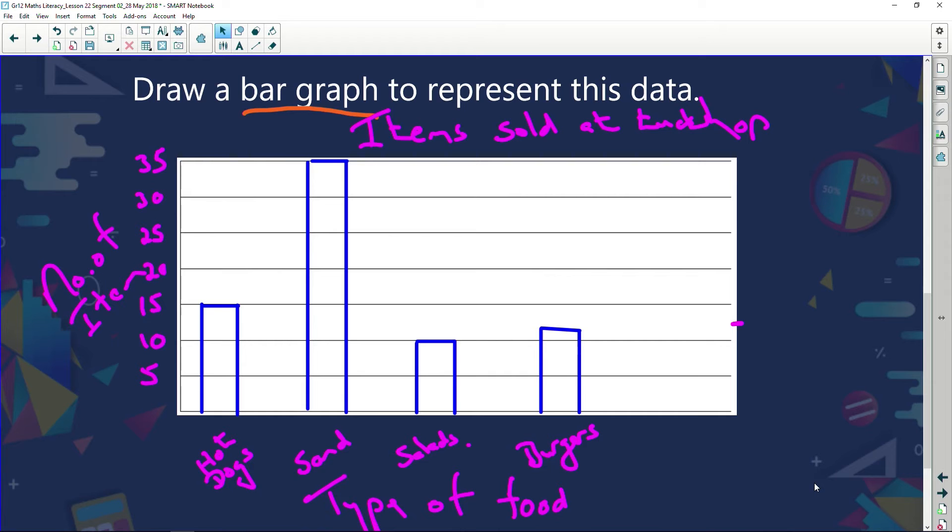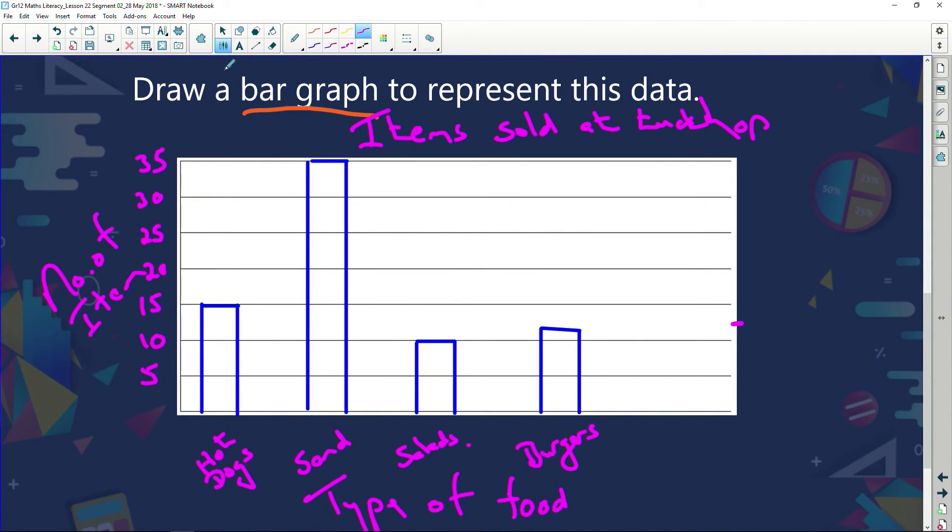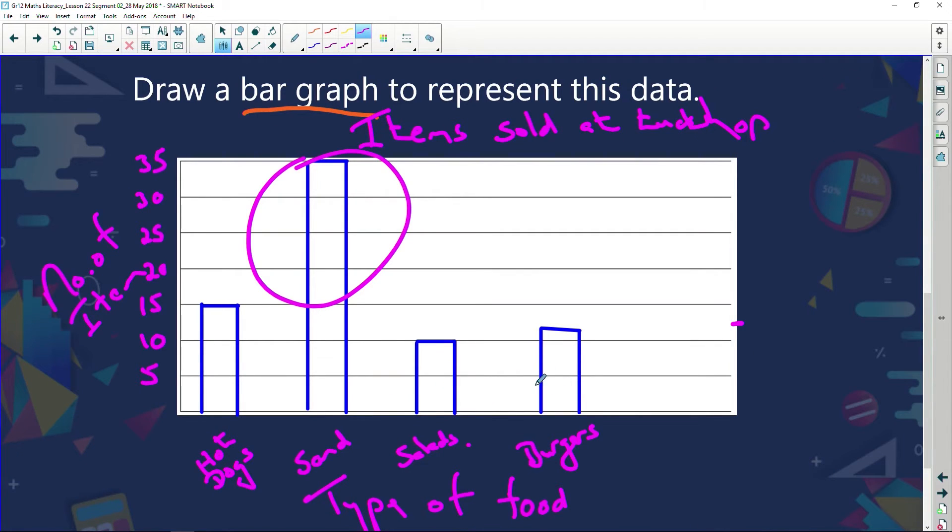And guys, the nice thing about a bar graph is this, that you can see straight away what's popular. And not only what's popular, but you can see it's really, really popular. It doesn't come anywhere near the others. Look how much higher it is. So we know that sandwiches are a thing we've got to keep in our tuck shop. You can see burgers and salads. There's not much difference between salads and burgers. And so if the school governing body said, listen, guys, you can only sell three things at your tuck shop.